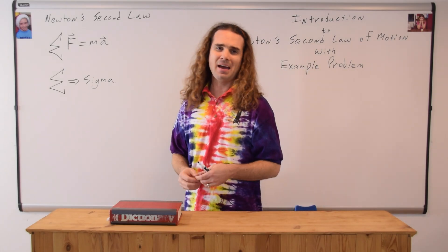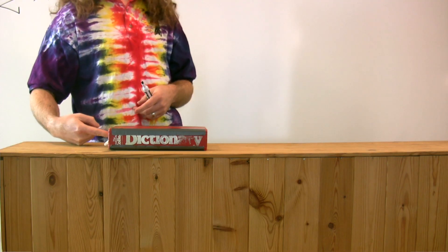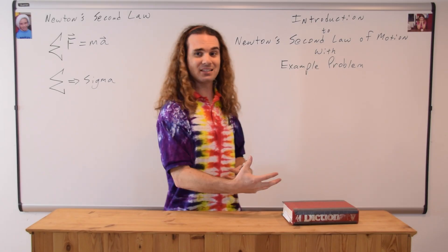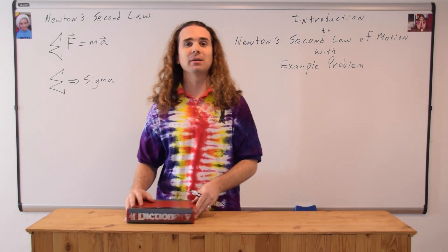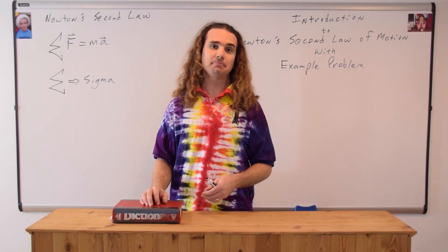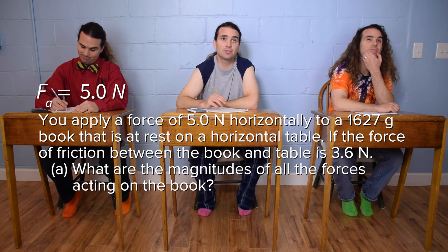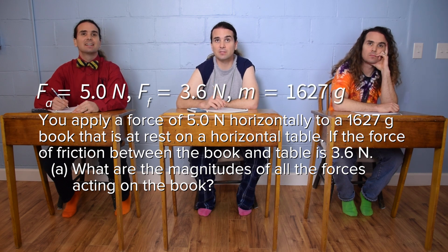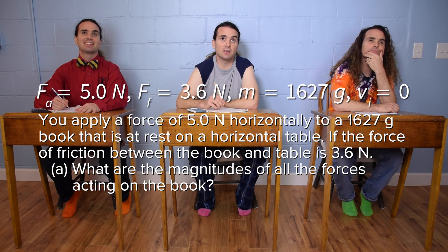We have a book with a mass of 1,627 grams and we are applying a force of 5.0 Newtons on it. We're trying to figure out all the forces that act on the book while we are applying that force. Please list all the givens: the force applied equals 5.0 Newtons, the force of friction equals 3.6 Newtons, the mass of the book equals 1,627 grams, and the initial velocity equals zero.